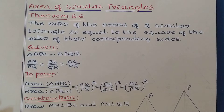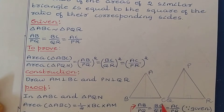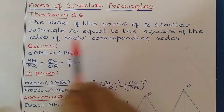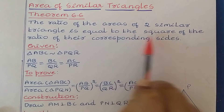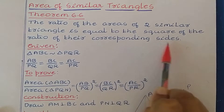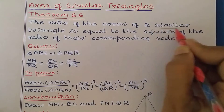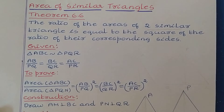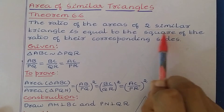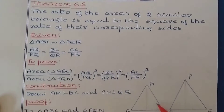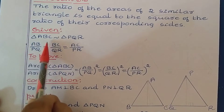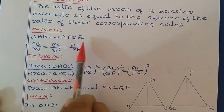First I am drawing here two triangles — triangle ABC and triangle PQR. They have given that the ratio of the areas of two similar triangles is equal to the square of the ratio of their corresponding sides. So first let us write the given data: triangle ABC is similar to triangle PQR.